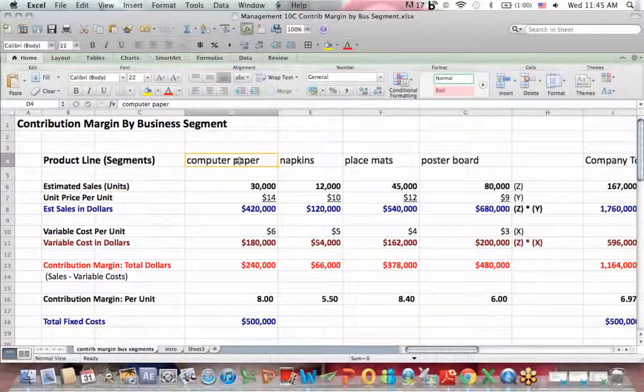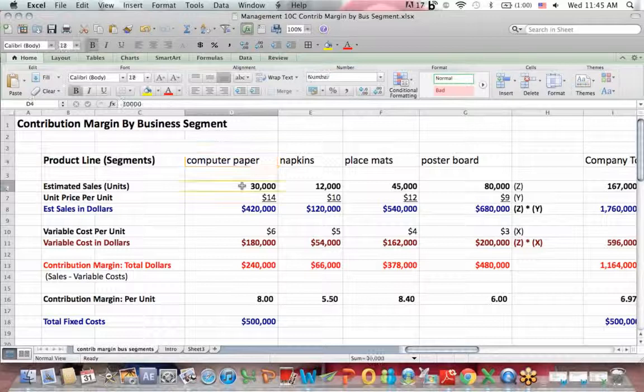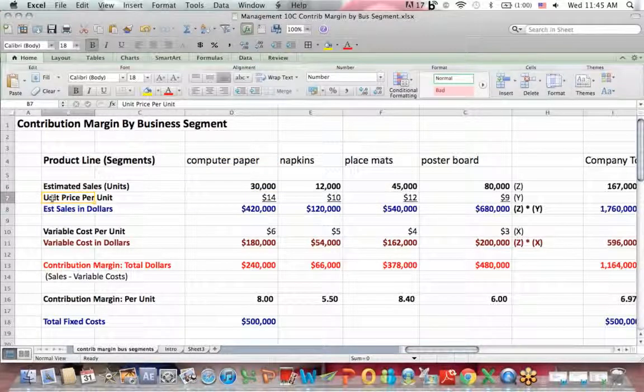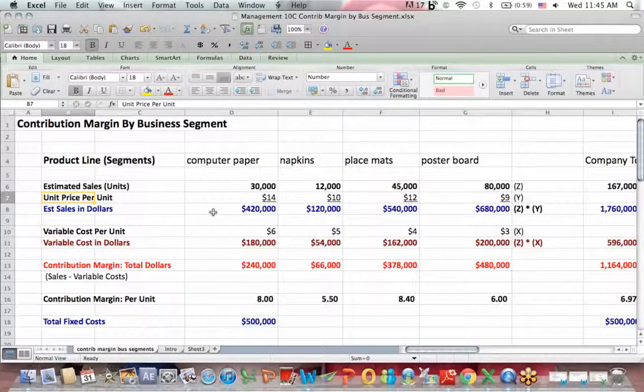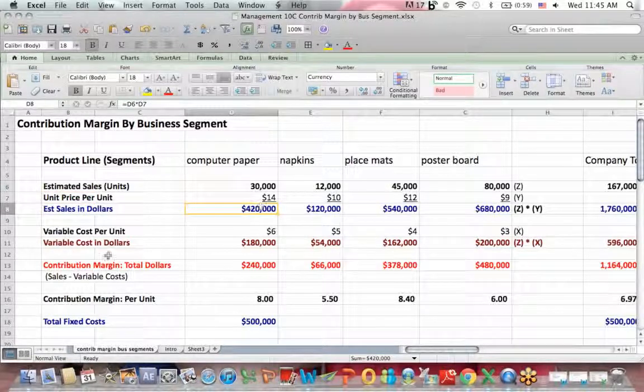Sales per unit, let's go down to the computer paper column. 30,000 units. The unit price is $14 per unit. So I multiply those two together to get estimated sales in dollars that you see in blue, which happens to be $420,000.